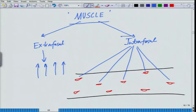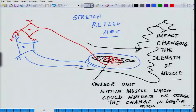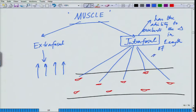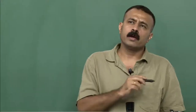These intrafusal muscles are the sensor unit within the muscle, which could evaluate or judge the change in length. This intrafusal muscle has the ability to evaluate the change in length of muscle. To understand how some muscles become intrafusal and some become extrafusal, we need to take a slight detour to understand how muscles are exactly formed in our body.